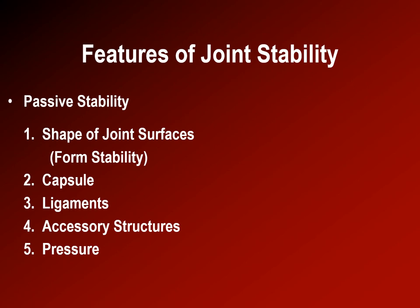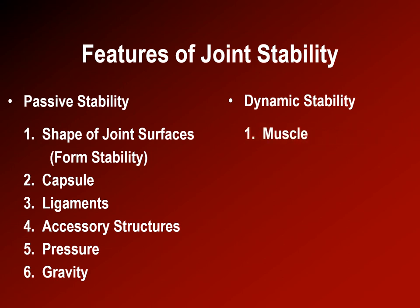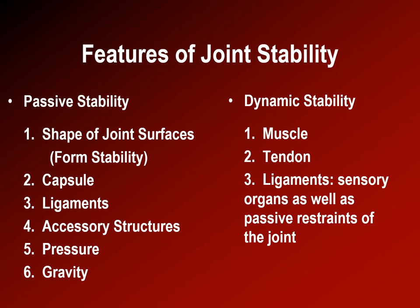There's also active stability from joints. Dynamic stabilizers include the muscle and tendon, and ligaments to some extent. Ligaments — in addition to being mechanical restraints — are also sensory organs. For example, as the ACL is stretched, it sends signals back to the nervous system telling the hamstrings to engage, helping prevent too much anterior shear force across the knee.